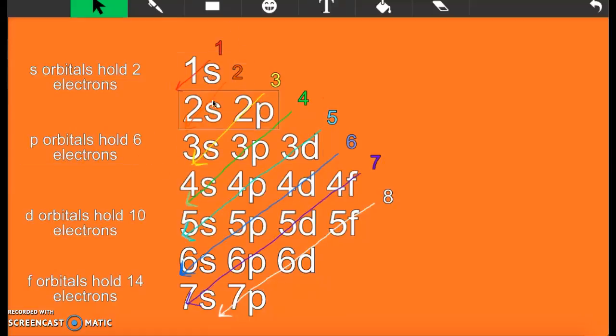So far we have 2, plus 2 is 4, plus another 6 is 10 electrons. So the entire first 2 periods worth of electrons, those first 2 rows, fit in these 3 energy levels.